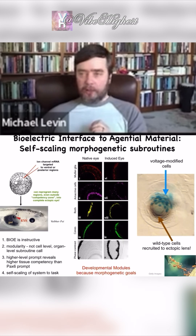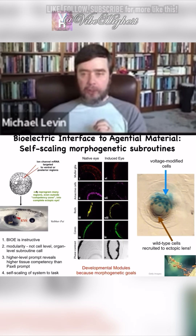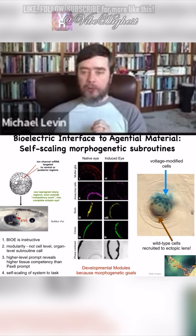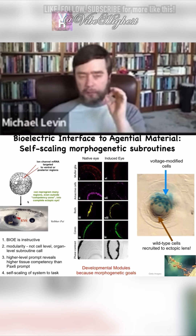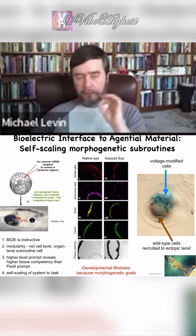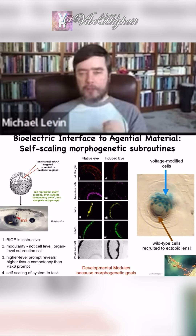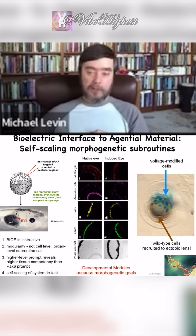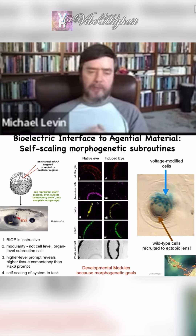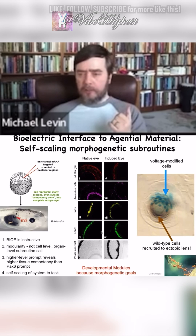What you can do is inject into this early embryo RNA encoding a particular ion channel that produces a pattern of a particular voltage, and sure enough those cells get the message and they build an eye — in this case on the gut. These eyes have all the same layers: the lens, optic nerve, all the same stuff.